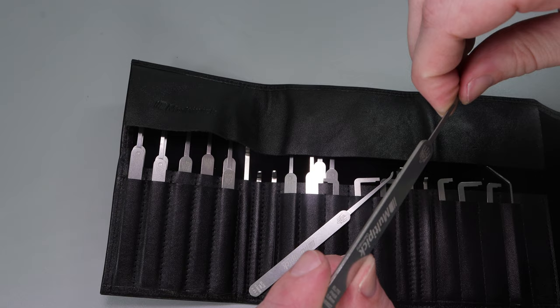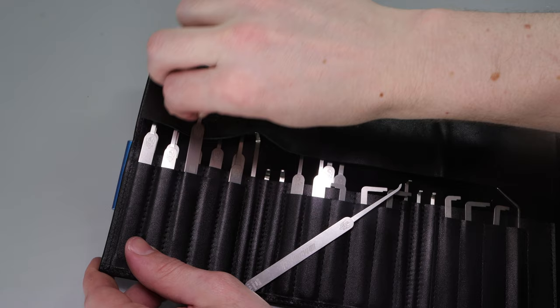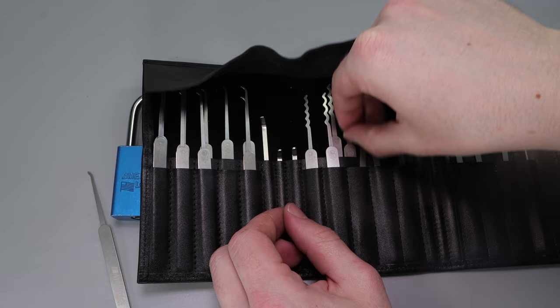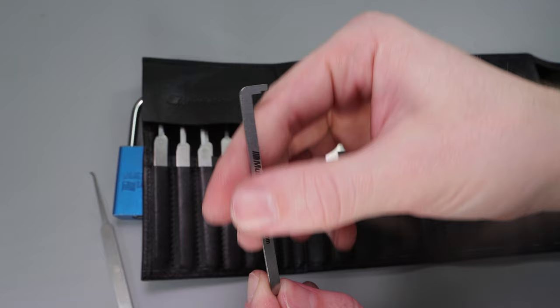What I like to do additionally is use a top of the keyway tensioner that's about 0.050 thousandths of an inch thick. So I'm going to use this one right here, which is going to be 1.3 millimeters thick.